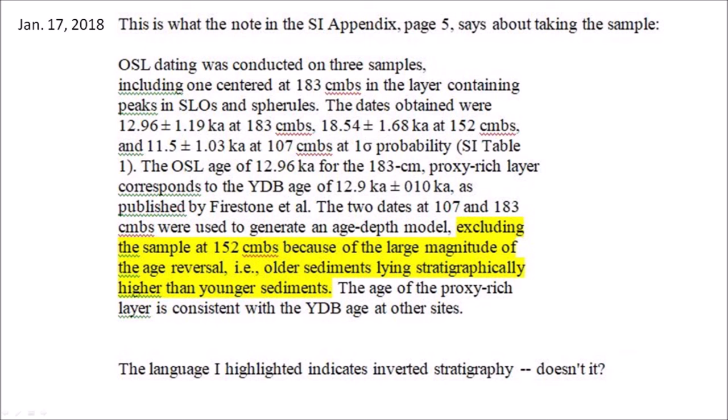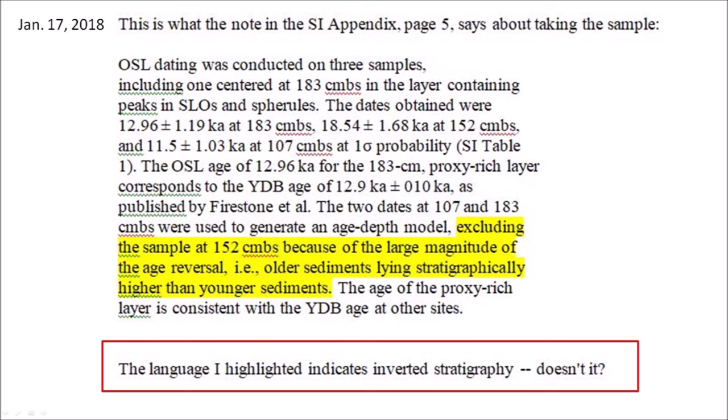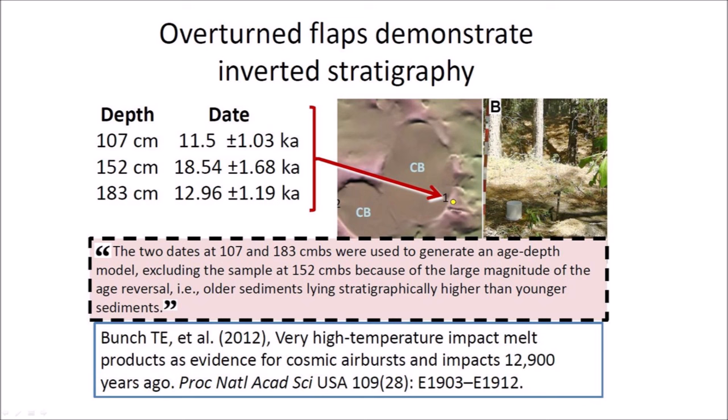Adam then asks: The language I highlighted indicates inverted stratigraphy, doesn't it? It certainly does. I have mentioned in previous presentations that in 2012, when Bunch's Melt Products paper was written, the Carolina Bays were thought to have formed by gradualistic wind and water mechanisms, so the significance of the inverted stratigraphy in the core sample from the rim of the bay in Blackville, South Carolina was not recognized.